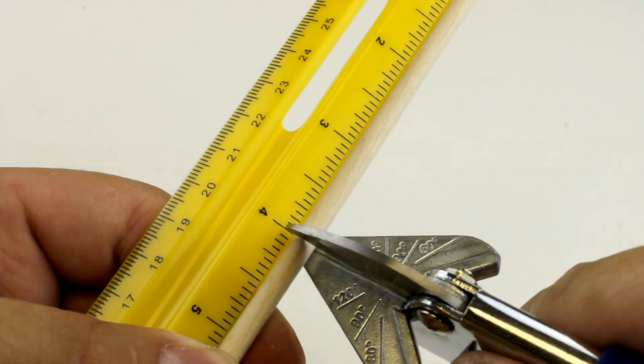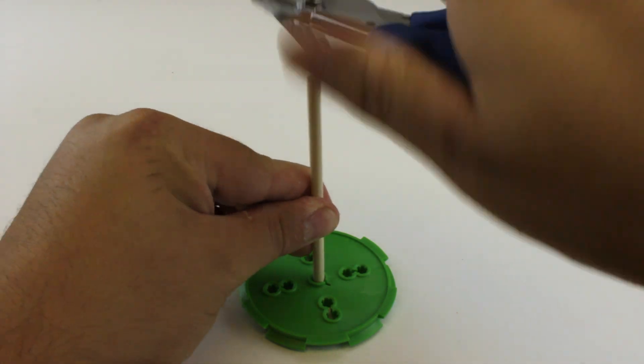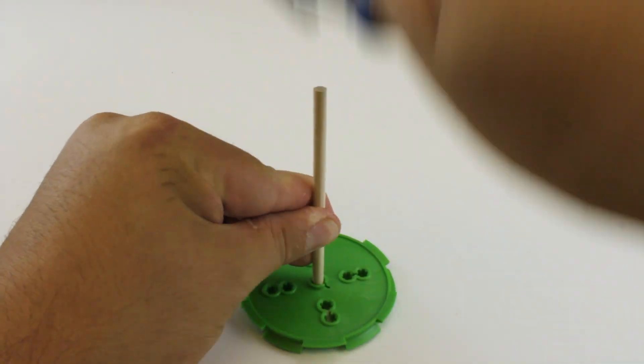Cut a dowel to 100mm, which is about four inches. Then place that dowel into the larger pulley. You can either push or tap it in with a pair of easy cutters.